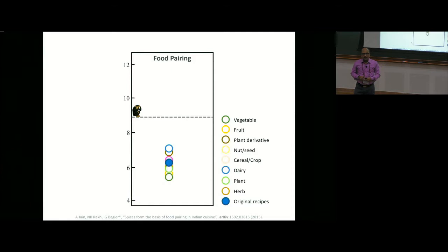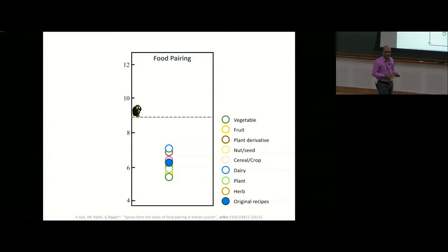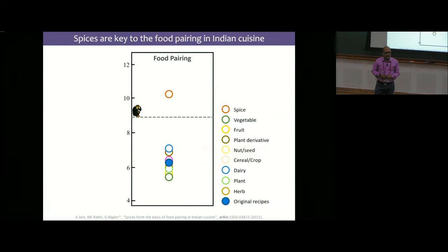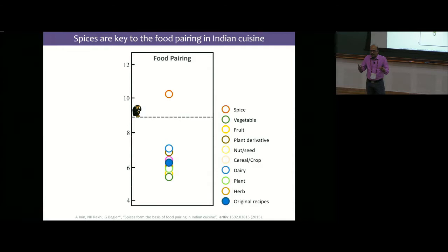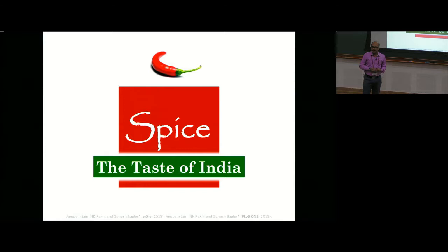We found that for most ingredient categories, intracategory shuffling changes the food pairing index only marginally. But for one category, shuffling drastically modifies food pairing in Indian cuisine. Many of you can guess it—it is spices and herbs. If you were to shuffle spices, food pairing jumps quite a lot and becomes more like a monkey cuisine, suggesting that spices and herbs are the fulcrum of Indian cuisine. Essentially, the flavor molecules in spices affect the very nature of Indian cuisine.